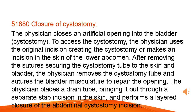Closure of Cystostomy: The physician closes an artificial opening into the bladder, known as a cystostomy. To access the cystostomy, the physician uses the original incision or makes an incision in the skin of the lower abdomen. After removing the sutures securing the cystostomy tube to the skin and bladder, the physician removes the cystostomy tube and sutures the bladder musculature to repair the opening. The physician places a drain tube, bringing it out through a separate stab incision in the skin, and performs a layered closure of the abdominal cystostomy incision.